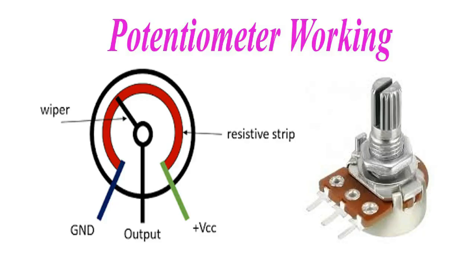The resistive track acts as a series of resistors, and the wiper divides this track into two parts. The output voltage is taken from the wiper terminal, which is connected to one of the end terminals through a variable length of the resistive track.